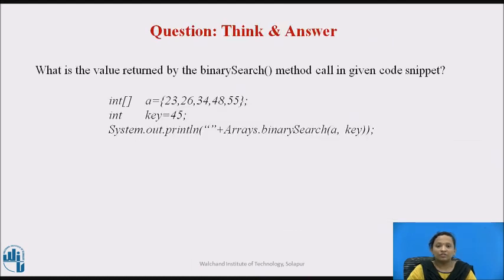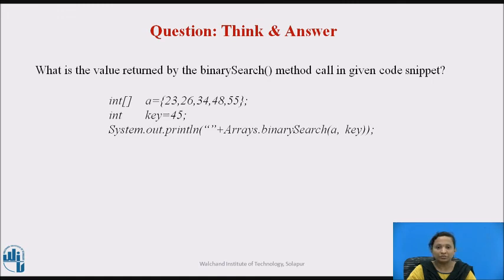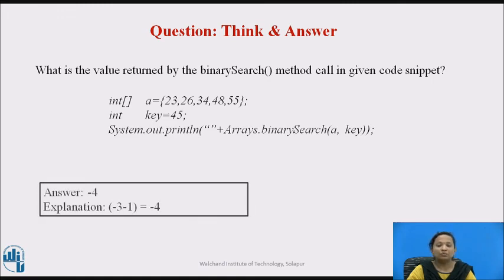Now pause the video and answer the below question: what is the value returned by the binary search method in the given code snippet? The value 45 does not exist in array A, so the new insertion point would be index 3 if 45 were inserted into the sorted array. Therefore, binary search returns minus insertion point minus 1, which is minus 3 minus 1, equal to minus 4.